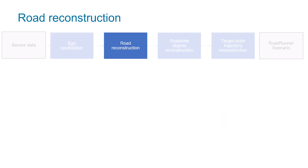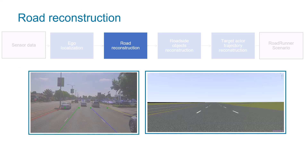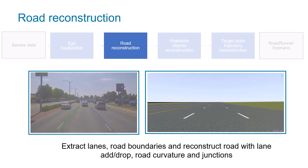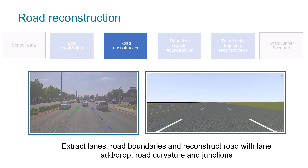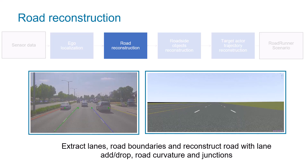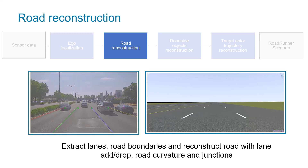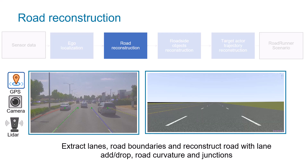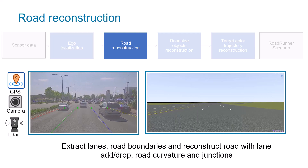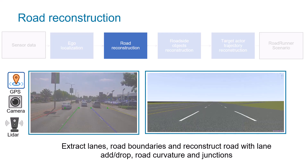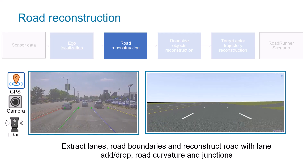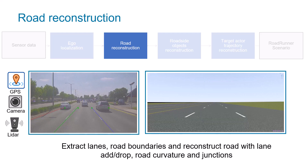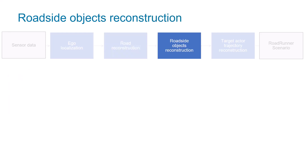Road reconstruction involves extracting essential information such as lanes and road boundaries from lidar data, or using a combination of GPS and camera data. We can also reconstruct scenarios having lane additions, drop-offs, road curvature, and junctions.